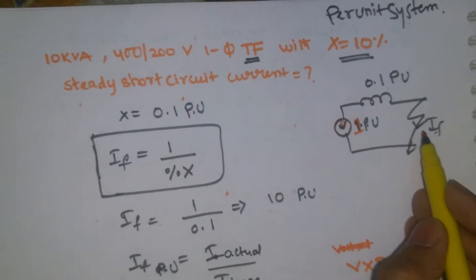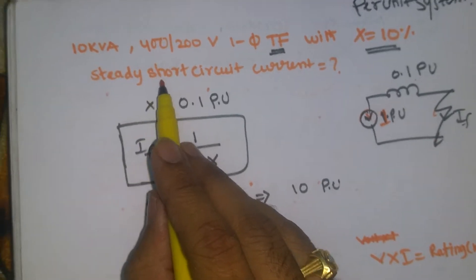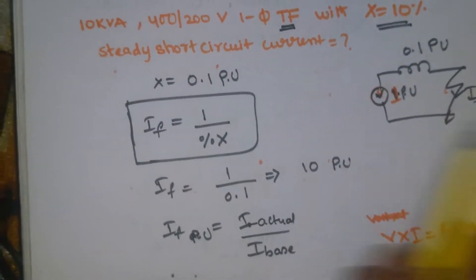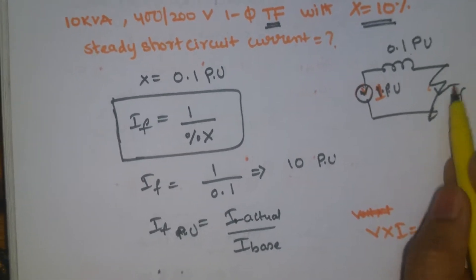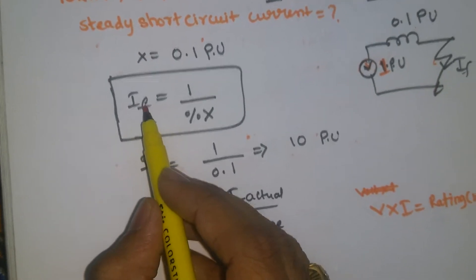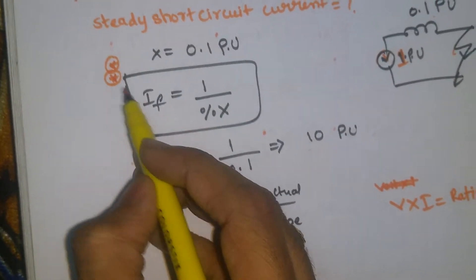One fault occurs. It's asking to find steady short-circuit current, so I am considering that is I_F. I need to find I_F here. Very simple. This is very, very important.